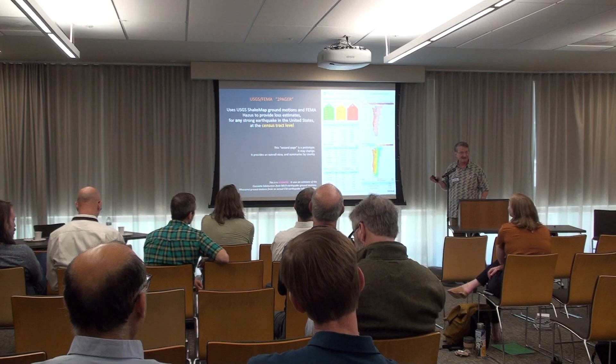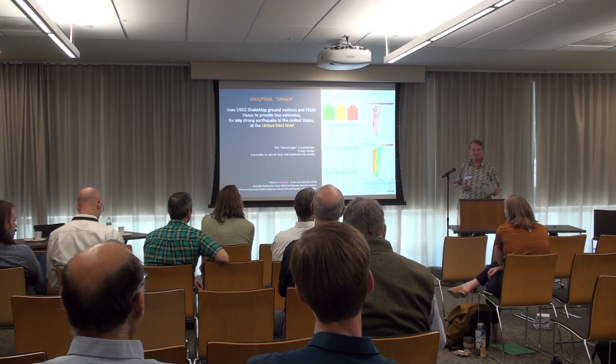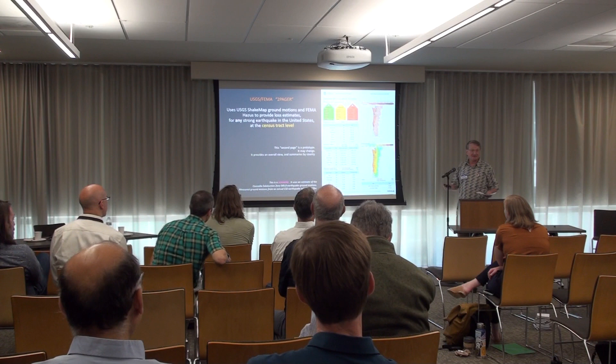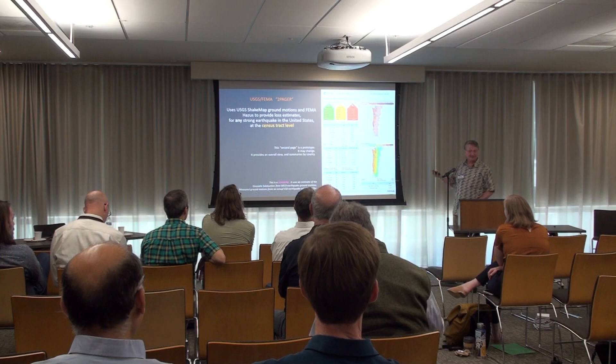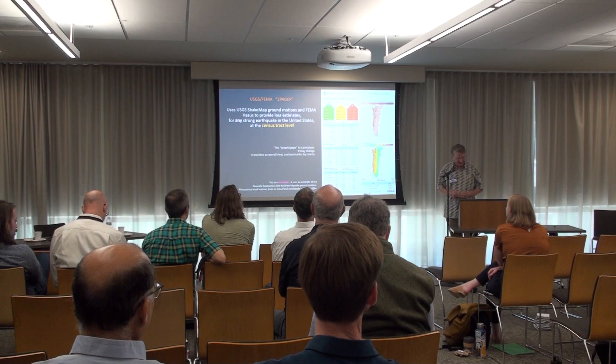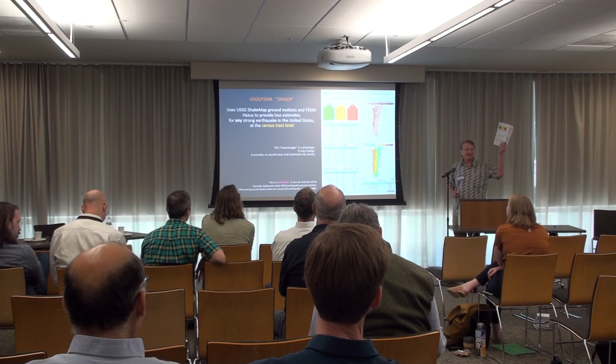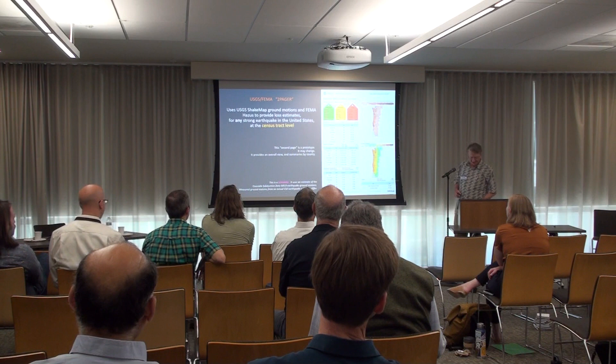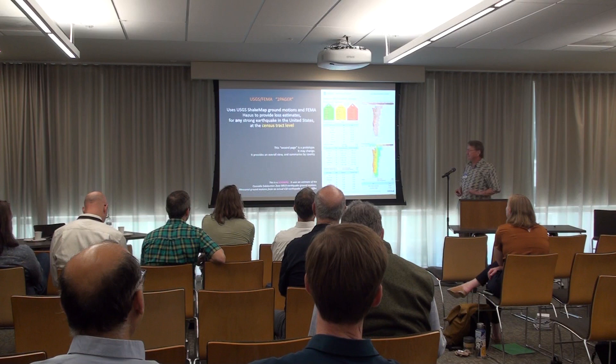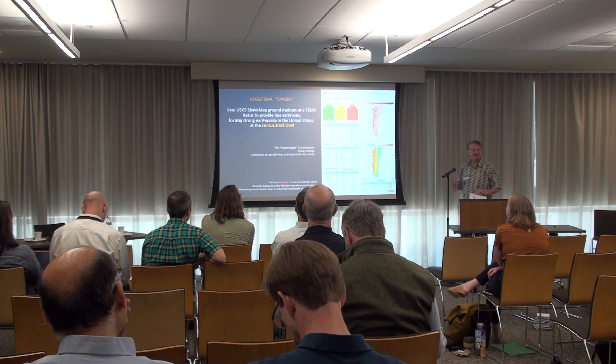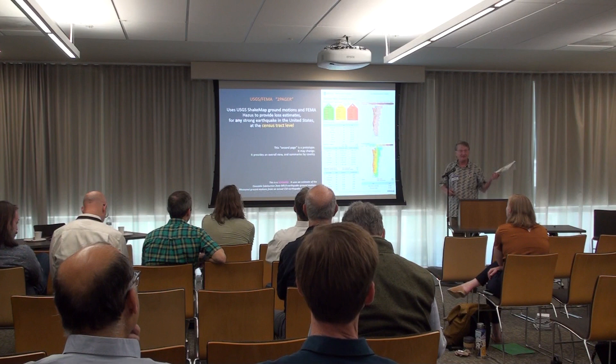This is a scenario for the Cascadia subduction zone — used for planning purposes, not after an actual earthquake, because earthquakes always surprise us. Ground motion will be different, but we do our best with the information at hand. As you see on here, there are red, yellow, green estimates, economic losses, injuries, and fatalities. This is a prototype and its format may change as the FEMA team gets additional feedback. RDPO people, note the top counties in this scenario.